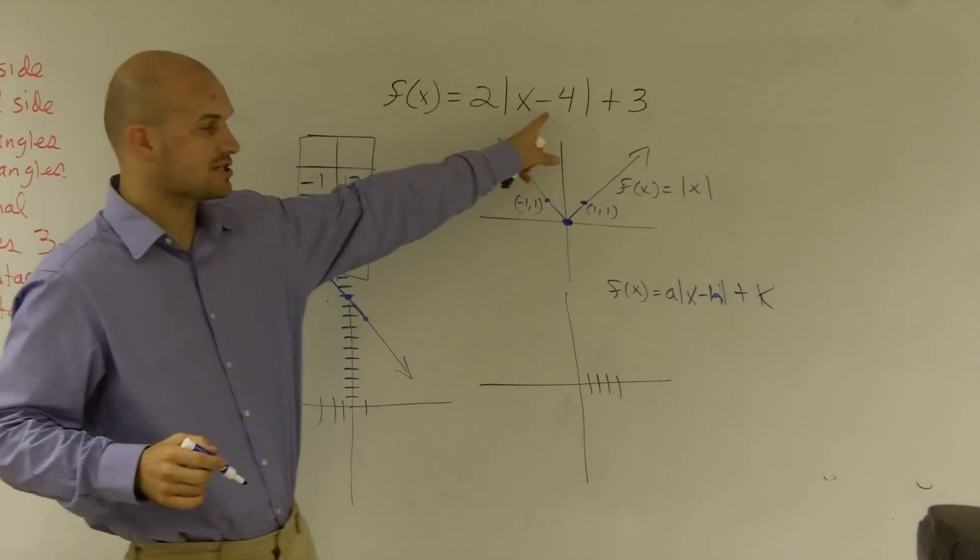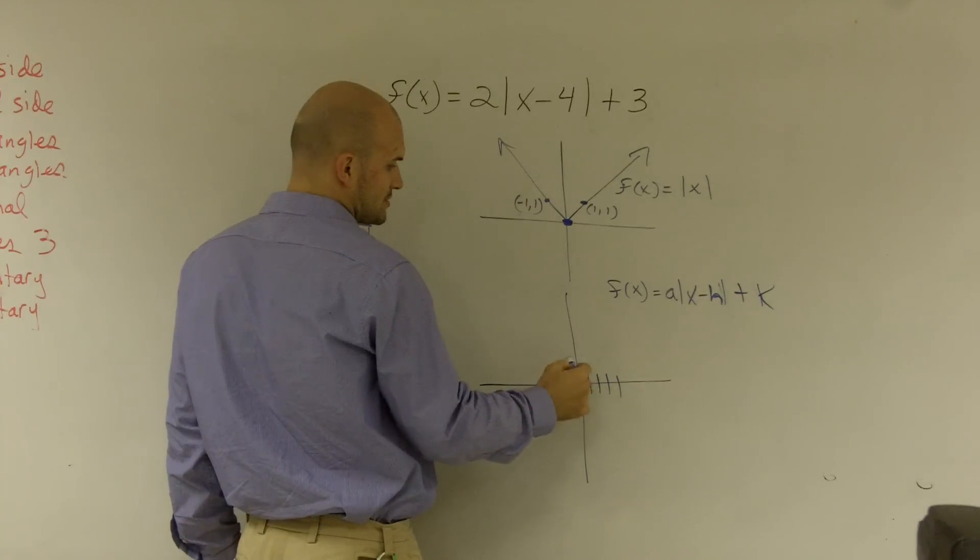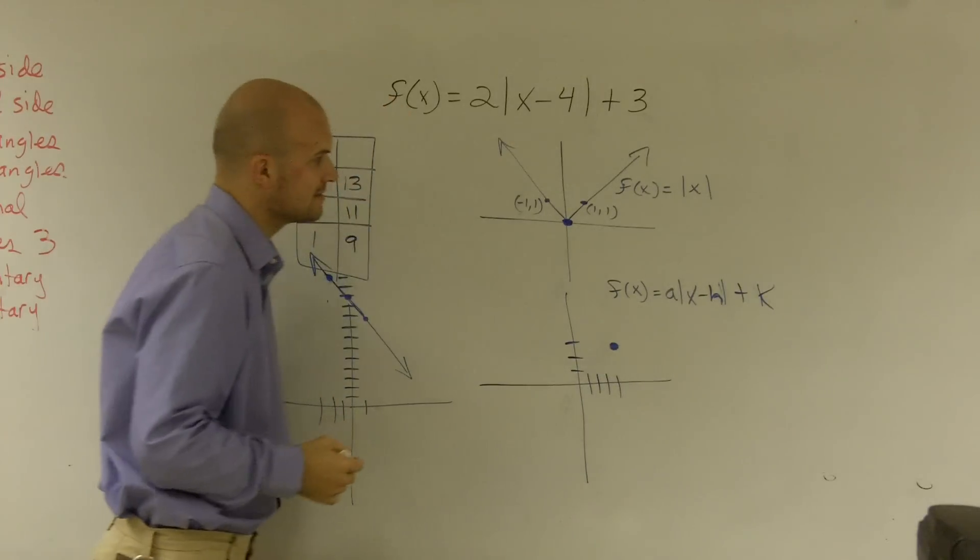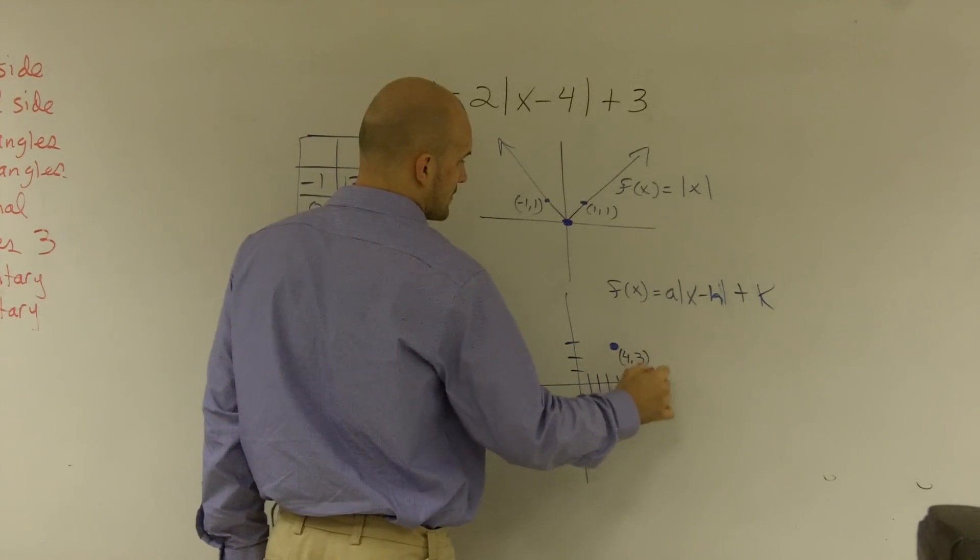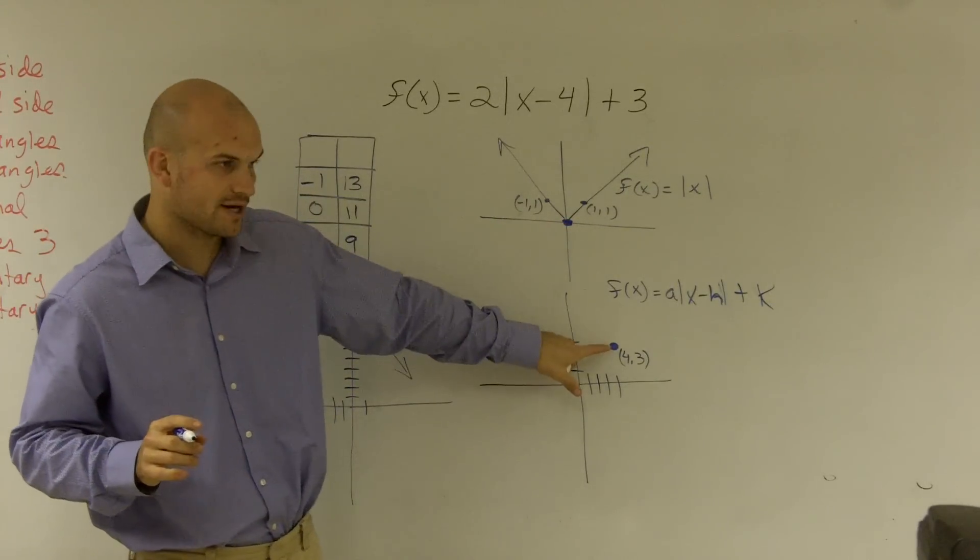Negative h tells me shift 4 units to the right, and then my 3 tells me shift 3 units up, 1, 2, 3. So therefore, now my new vertex is at 4, 3, alright? So you want to find your new vertex. So pretty much what I did was I just shifted this point to over here.